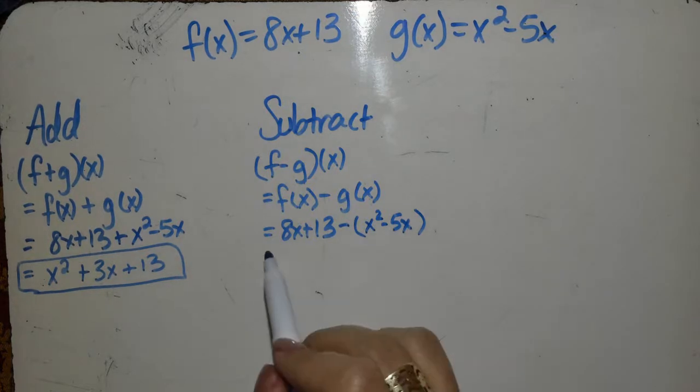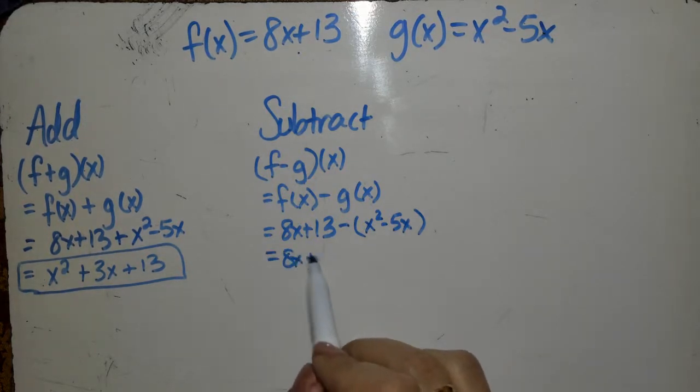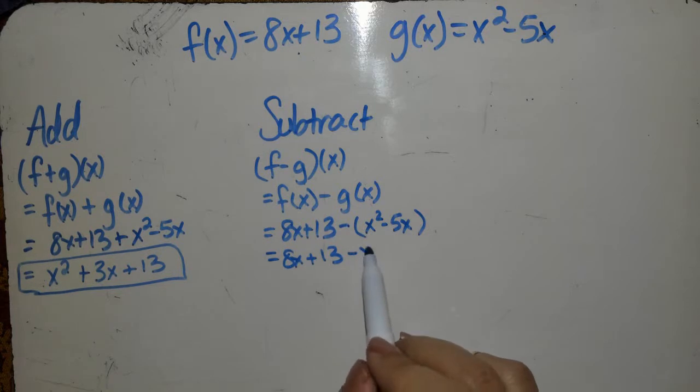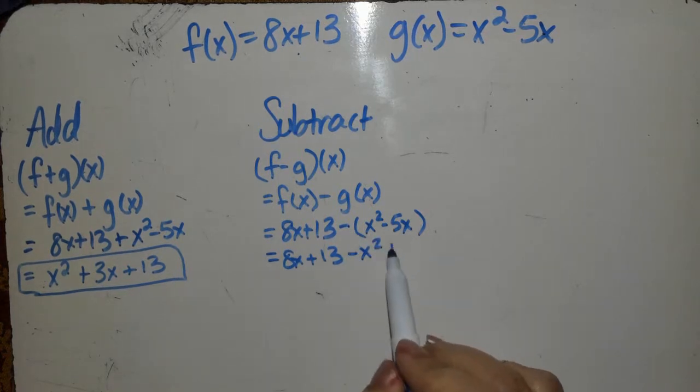That minus sign changes every sign to the right of it. So that positive x squared is now a negative x squared, minus a negative is a plus.